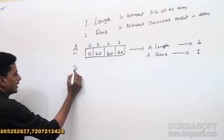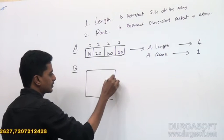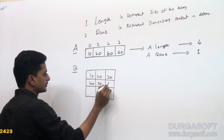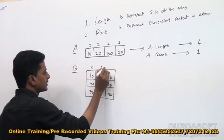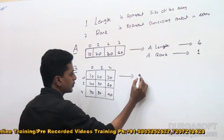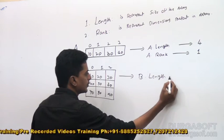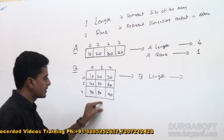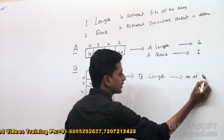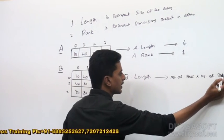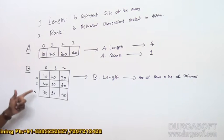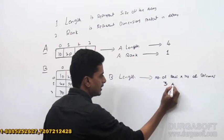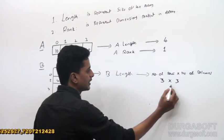Let us consider one more array named B, this time a two-dimensional array. For B.Length in a two-dimensional array, we calculate number of rows multiplied by number of columns. Here there are 3 rows and 3 columns, so B.Length equals 9.